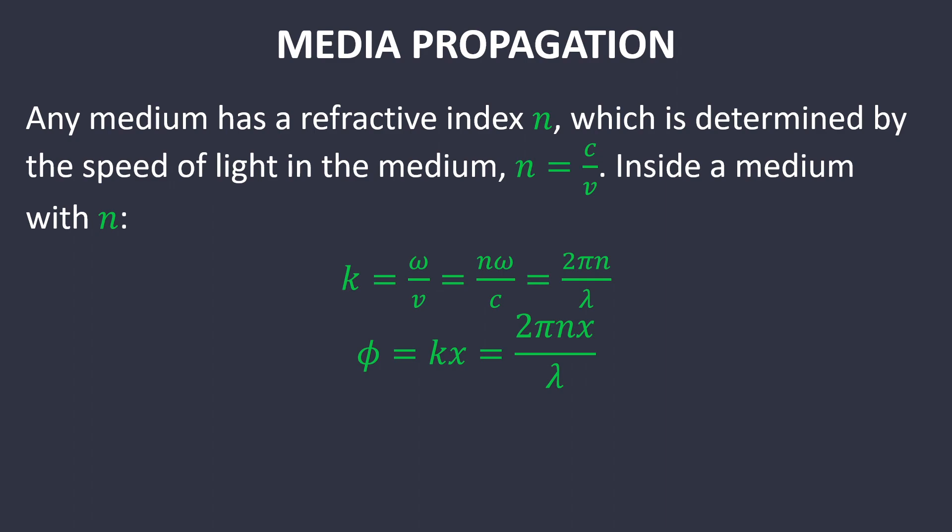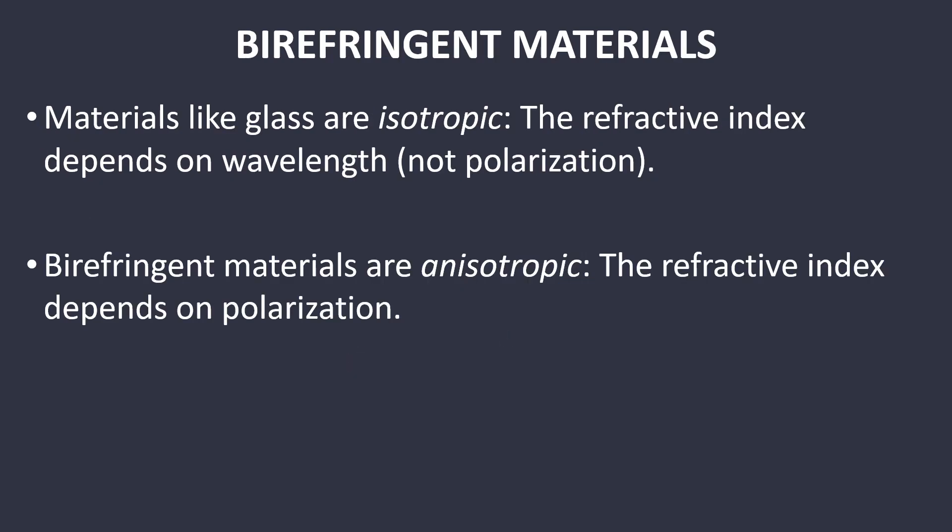In any medium which has a refractive index n, which is determined by the speed of light in the medium, you have a resulting new wave number which depends upon n, and a phase shift that also depends upon n. Specifically, we will be talking about birefringent materials. Materials like glass are isotropic, meaning the refractive index depends upon wavelength and not polarization.